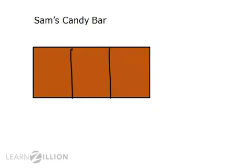Let's see how this works in a problem. Sam has a candy bar that is broken into equal parts that look like this. Sam thinks that if he gives away three thirds of his candy bar, he will still have a piece left over for himself. Is he right or wrong? Well, to solve this problem, first we would have to count the pieces in the candy bar. We see that it is split into three equal parts, so that means that each equal part is called a third. If he gives away three thirds, that would look like this: one third, two thirds, three thirds.